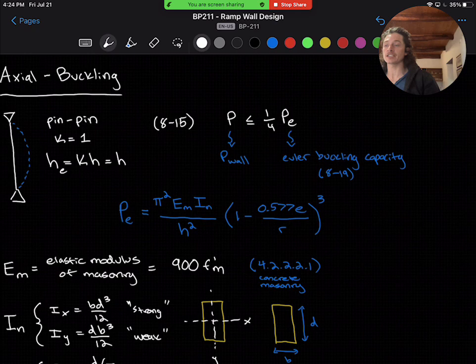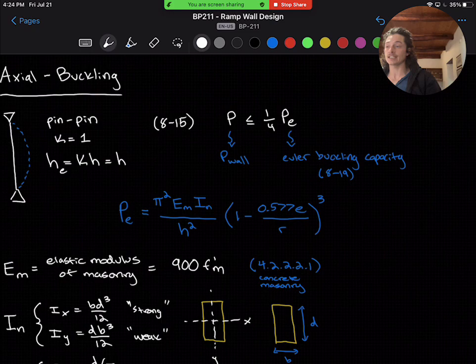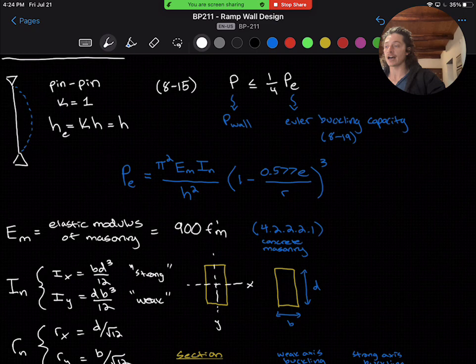And the overarching equation for this check is equation 8-15. P has to be less than or equal to one-quarter PE, where P is the value of P wall, the force on the masonry column, and PE is the Euler buckling capacity calculated in equation 8-19, which I've shown here below for you. And I won't read out loud because it's a long equation, but I will say there are a few new variables in this equation. So we're going to have to define a few new terms: EM, IN, and E.